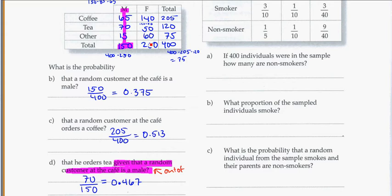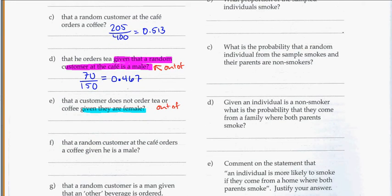So I've got 60 out of 250, because my given hint is that they're female. So out of 250, it's 60 that are ordering something other than tea or coffee. So that's 60 out of 250. And put that into your calculator. You should get 0.24.